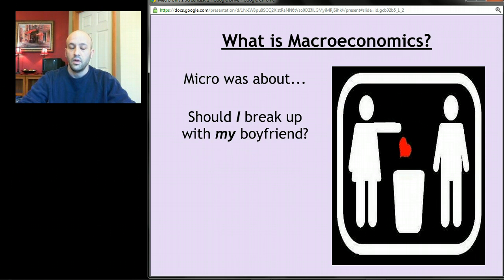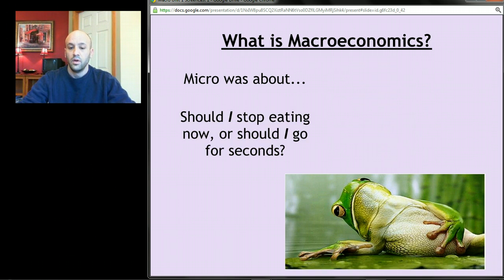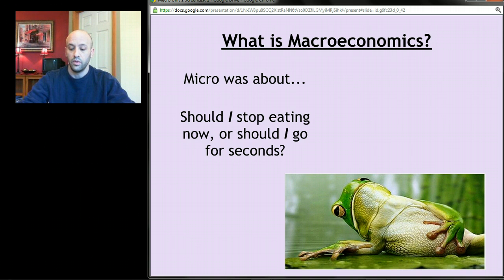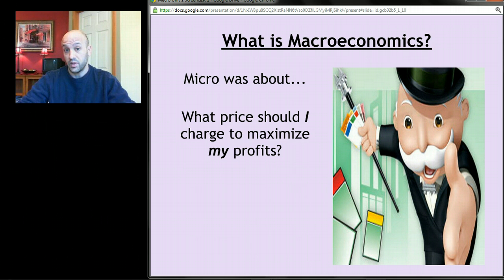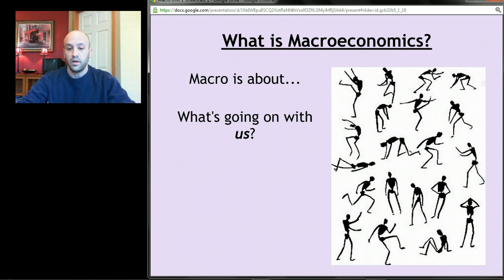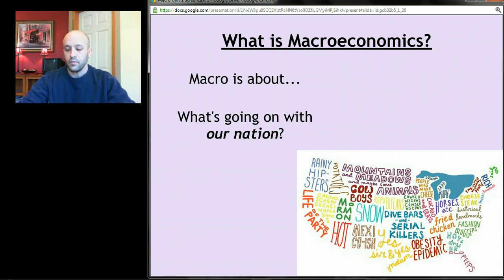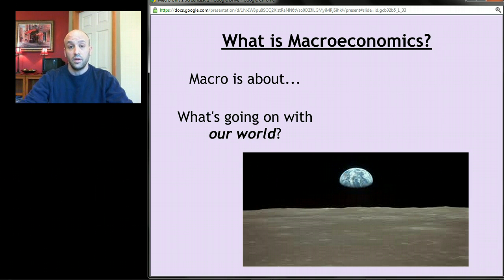Microeconomics was about questions like: should I break up with my boyfriend? What should individuals do? Or should I stop eating seconds before I get too full? That would be a microeconomic question — a question about an individual unit. What price should I charge to maximize my profits if I'm a business owner? Macroeconomics, on the other hand, is about pretty much all of us — not just you, me, or one business, but the entire economy, what's going on with our entire nation or even the entire world. Micro means small, macro means big.